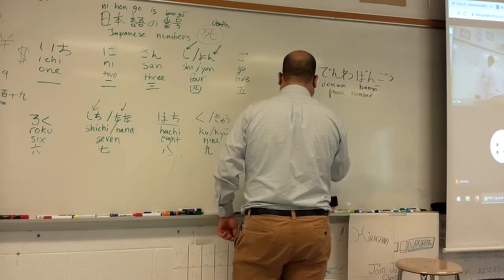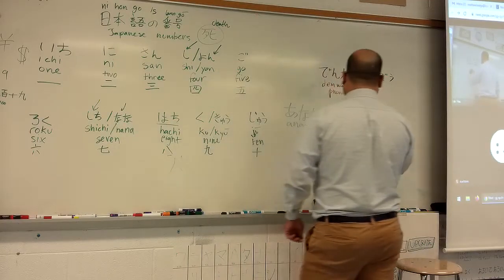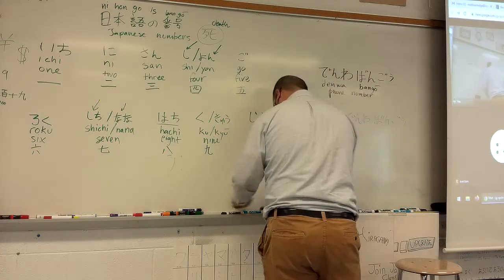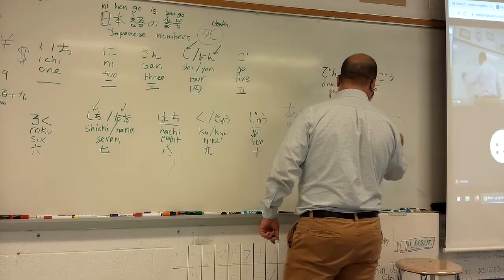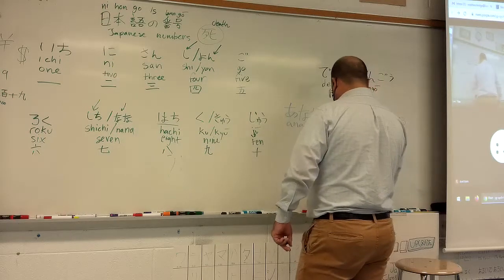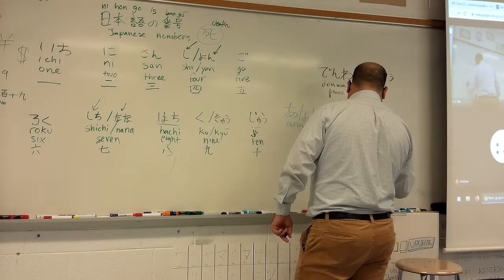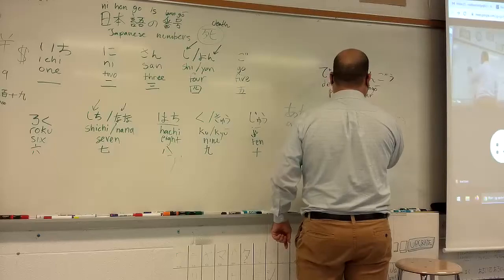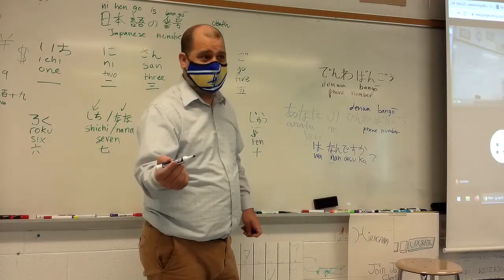Okay. So let's go ahead and put this here. Anata. Anata means you. Anata no. Your. Anata no denwa bango wa nan desu ka. Again, remember, ka means what? Question mark. So, Anata no denwa bango wa nan desu ka. What does this mean? What's your phone number?